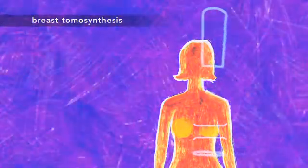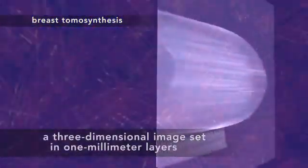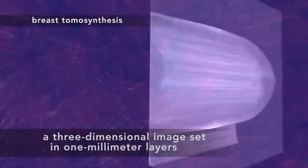That's because the x-ray arm swings over your breast, gathering enough extra information to create a three-dimensional image set. So now the doctors can see and search through your tissue in one-millimeter layers.